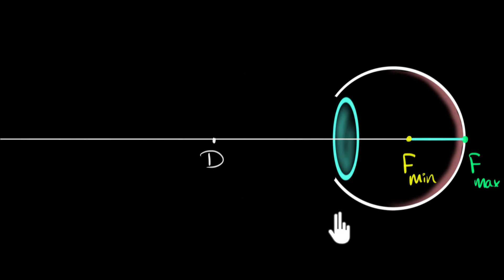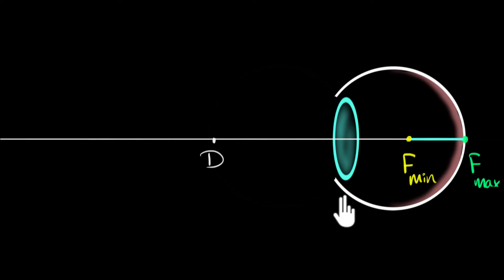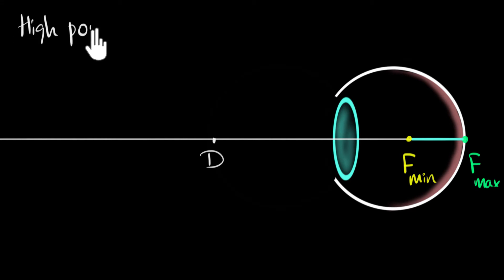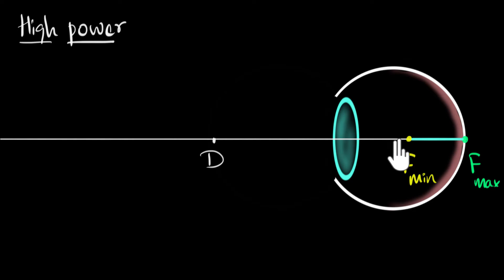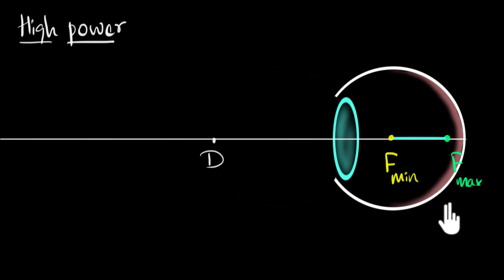Now let's come to the defective eye. What causes these defects? The short answer is the power of the lens is a little bit higher than usual, or a little bit lower than usual. Let's explore the first case: the power of our lens is a little bit higher than usual. This means our lens has more than usual converging power — in other words, it will have smaller focal lengths than a normal eye, so the range of focal lengths this eye can accommodate will be smaller than normal.